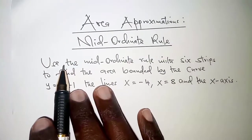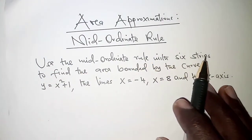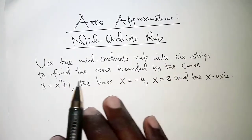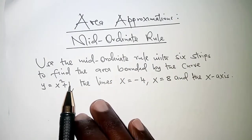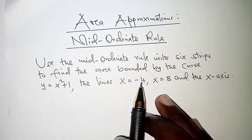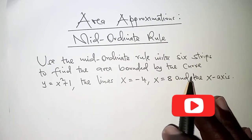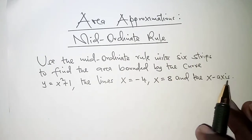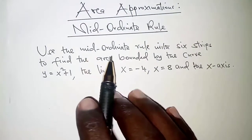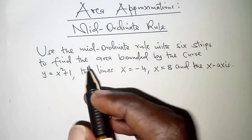The question reads: use the mid-ordinate rule with six strips to find the area bounded by the curve y is equal to x squared plus 1, the lines x is equal to negative 4 and x is equal to 8, and also the x-axis.